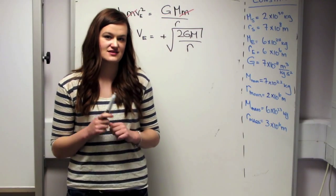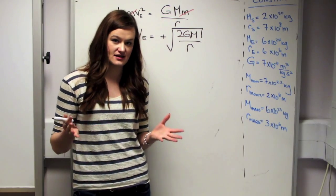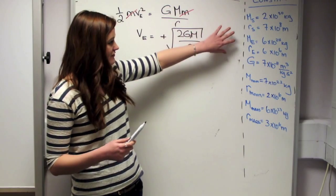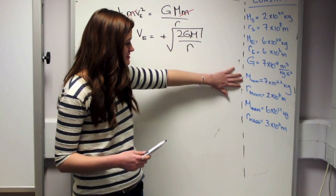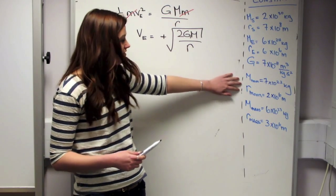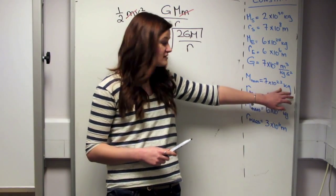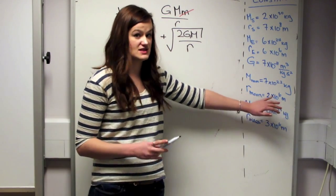So that was the escape velocity of the Earth. But by using the mass and the radius of different objects in our solar system, we can find their escape velocity too. So here we've got some written down. So we just did the Earth. And here are the mass and radius of the Moon. So the mass of the Moon is 7 times 10 to the 22 kilograms. And the radius of the Moon is about 2 times 10 to the 6 meters.